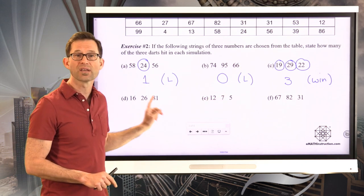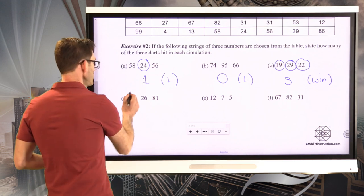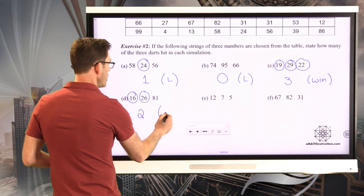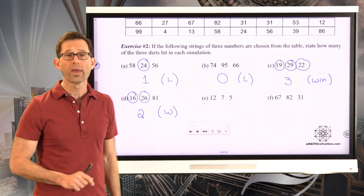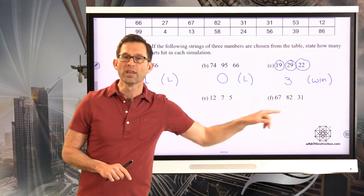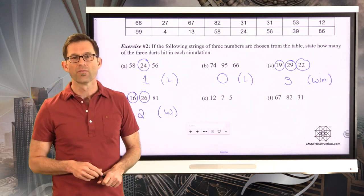If I've got 16, 26, and 81, the 16 and the 26 are in, that would be two, and that would also constitute a win. Remember, I just got to get two of the three darts in. Why don't you pause the video right now and do letter E and F? I know these are pretty easy, but go for it.